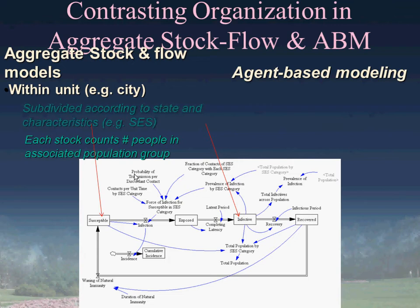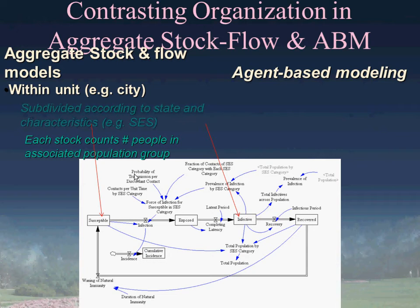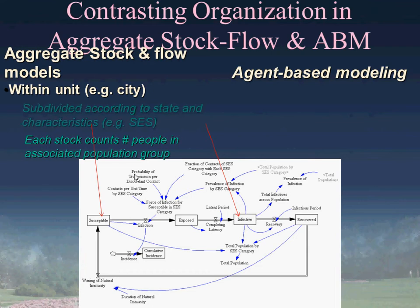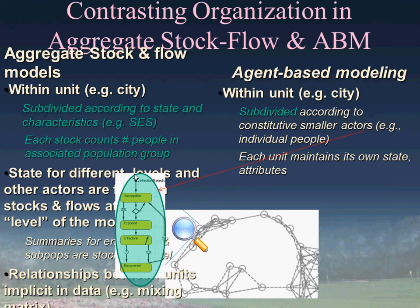So in system dynamics, we organize the model according to people's characteristics—their state and properties—and maintain the count of individuals that fall in each bin. By contrast, in an agent-based model, we organize the model not by state or characteristics, but by person in the population, and we then maintain as data the state and characteristics of that person. The organization is kind of the flip of what we see in a system dynamics model. Both are useful, both lend insight, but they're orthogonal to each other.